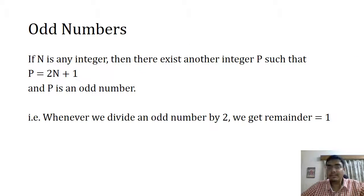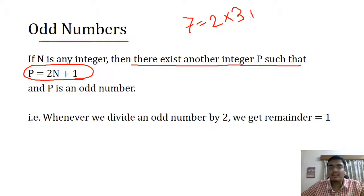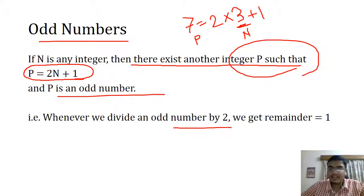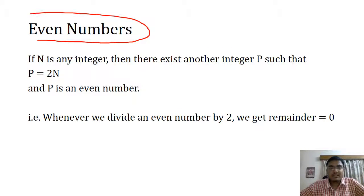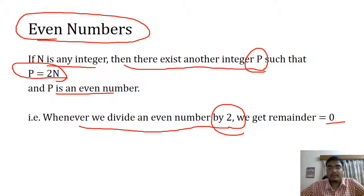Let us define odd and even more formally. For odd numbers, if n is any integer, then there exists another integer p such that p equals 2n plus 1. So if I have to represent 7, it is 2 multiplied by 3 plus 1. From this definition, if p is an odd number, then when we divide it by 2, we get a remainder equal to 1. Similarly, even numbers are those divisible by 2: p equals 2n. Whenever we divide an even number by 2, we get remainder equal to 0.